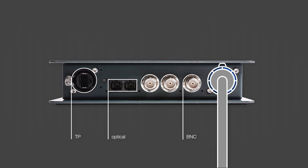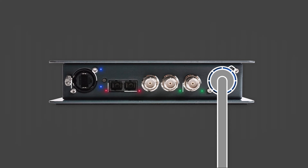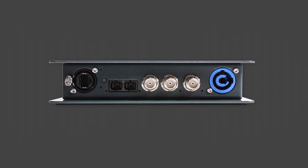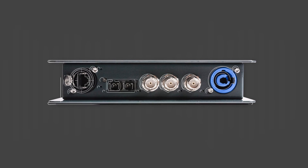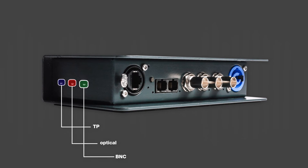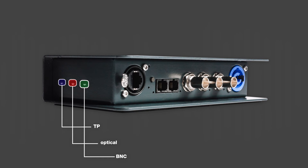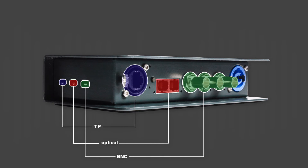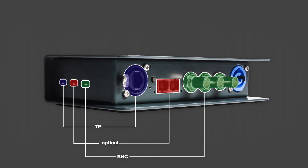Power is supplied via a Neutrik PowerCon cable, so ML-MeO is ready for use as soon as it's plugged in. Three toggle switches located on the left side of the device allow you to choose ML-MeO's signal routing, and their position corresponds to the position of the connectors.